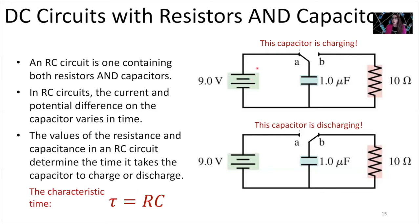Here is an example of how we would charge our capacitor. For a true RC circuit you need to have a resistor in the circuit as well. We have a battery supplying current to the capacitor, and there is a resistor in the circuit. The time it takes this capacitor to charge is defined by our characteristic time scale. Once the capacitor is fully charged, we can disconnect it from the battery and connect it across a resistor to discharge, creating a current that dissipates power within the resistor.